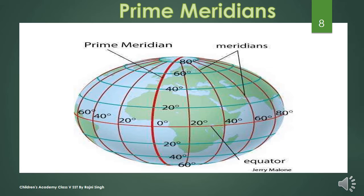The next topic is Meridians of Longitude. When you look at the globe, you will find two sets of lines — one running east to west and the other running north to south. We can say that imaginary lines that run from north to south are called meridians.